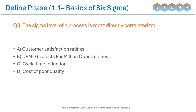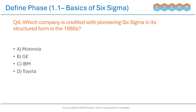Question 3: The Sigma level of a process is most directly correlated to? Question 4: Which company is credited with pioneering Six Sigma in its structured form in the 1980s?